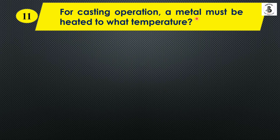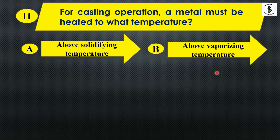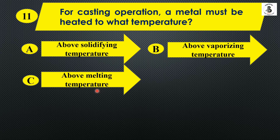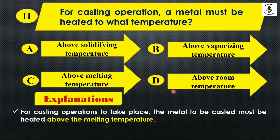Question eleven: For casting operations, a metal must be heated to what temperature? Option A: Above solidifying temperature, Option B: Above vaporizing temperature, Option C: Above melting temperature, Option D: Above room temperature. For casting, the metal must be heated above the melting temperature — the temperature at which the solid phase converts to liquid phase — so the metal is in the form of molten metal. The answer is Option C.